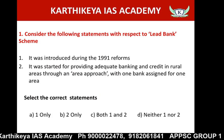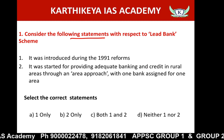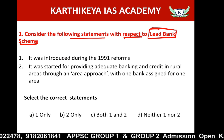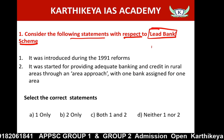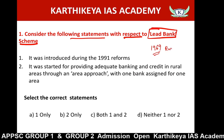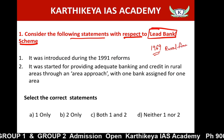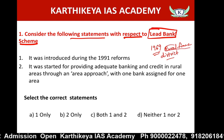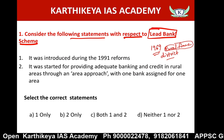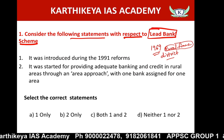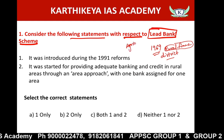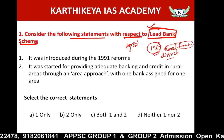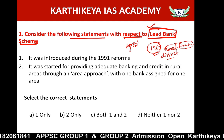The first question asks about the Lead Bank Scheme. The Lead Bank Scheme was started in 1969 to support rural financing through a district-level area approach. In rural areas, getting loans for MSME, priority sectors, or agriculture is very difficult, which is why the Union government introduced this scheme. Note that it was NOT introduced during the 1991 reforms — that statement is wrong.